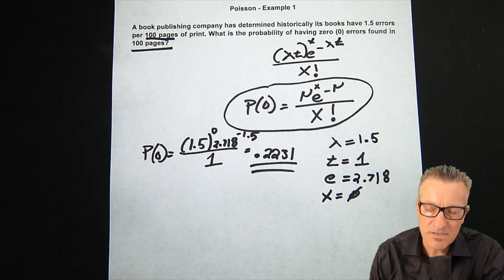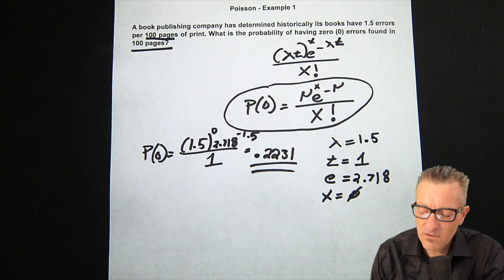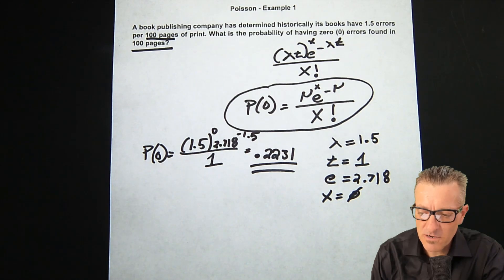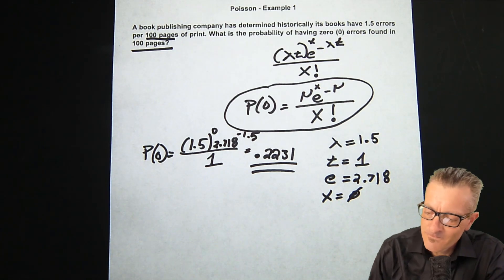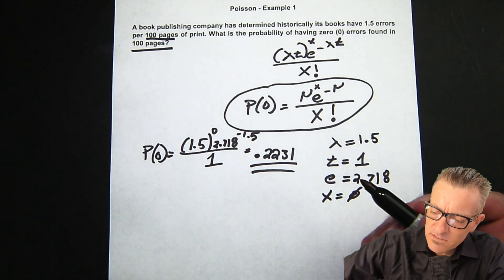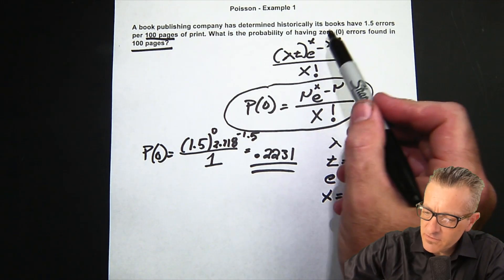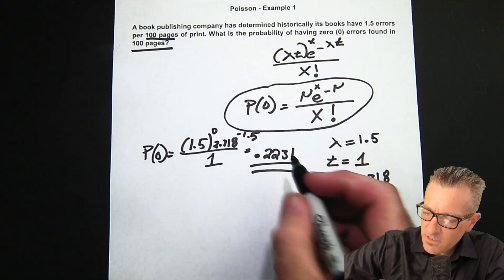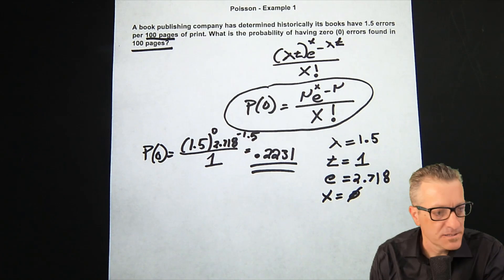If you don't have parentheses set up properly, you end up with some errors with the order of operations. Your calculator doesn't do a very good job, especially with negative exponents. This is our answer: zero errors found in 100 pages is 0.2231, or about 22.31 percent.